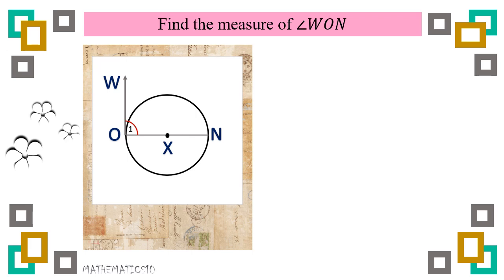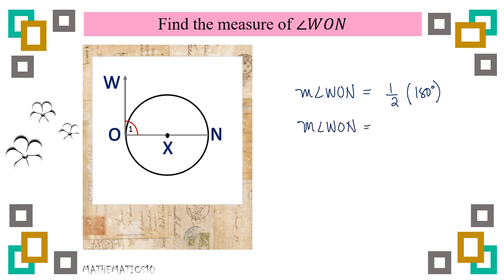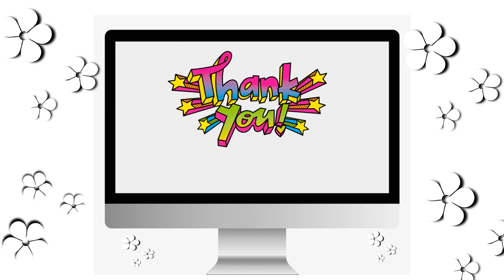One more example: find the measure of angle 1. Angle 1 intersects the semicircle of circle X. A semicircle measures 180 degrees. Applying Theorem 113, the measure of angle 1 equals one-half of 180 degrees, therefore the measure of angle 1 is 90 degrees. Did you learn about Theorem 112 and 113? Thank you so much for watching — see you in our next video lesson.